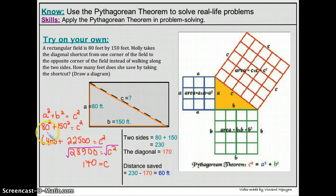And so it's 80 square, which is 6,400 plus 150 square, that is 22,500. If you put this into your calculator, you would get 28,900. And in order to get c, you have to take the square root of both sides, and you end up with c equals 170. So this distance right here is 170 feet.